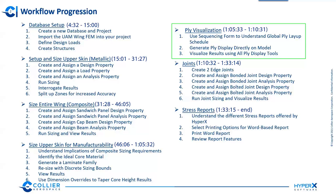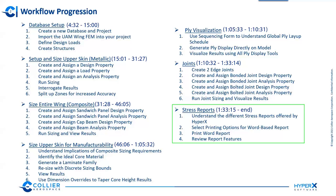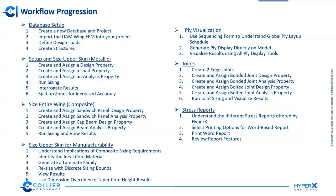From there, we'll switch gears a little bit and create two different edge joints — one bonded and one bolted — and size those for positive margin to show off the expansive joint capability in HyperX. At the very end, when we're happy with our design, we'll export a Word-based stress report and go over all the features available to print there. With all of that being said, let's go ahead and open up the software.